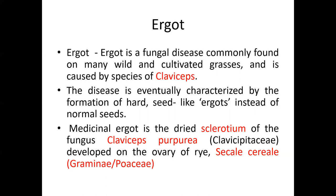There are four stages in the life cycle of ergot. The first stage is the ascospore stage, second is the sclerotium stage, third is the honeydew stage, and fourth is the sclerotium stage. The ovary of the rye plant gets infected with the ascospore of the fungus in spring or summer season. The spread of ascospores to other areas is influenced by wind and insects. After infection, the ascospores germinate under favorable conditions like moisture and damp climatic conditions.